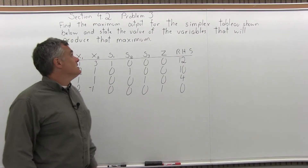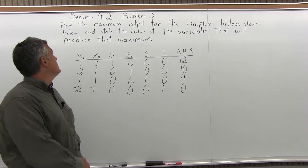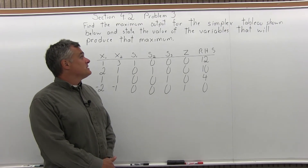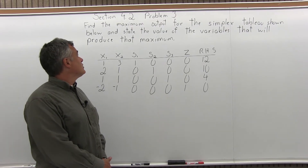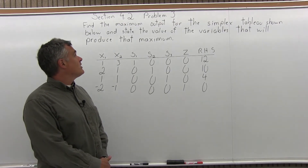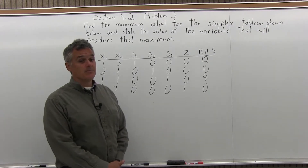This is Problem 3 from Section 4.2. It says find the maximum output for the simplex tableau shown below and state the value of the variables that will produce that maximum.